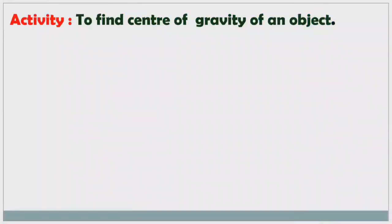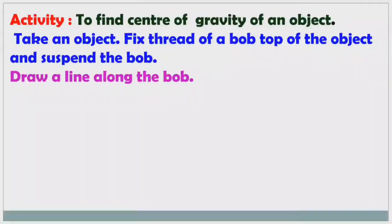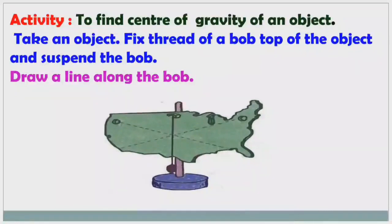Now we will see an activity to find the center of gravity of an object. For a regular shaped object, the center of gravity is at the geometric center. For an irregular shaped object, take the object, fix the thread of a bob at the top and suspend it. Draw a line along the thread.